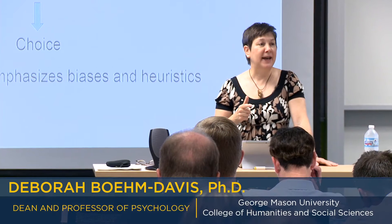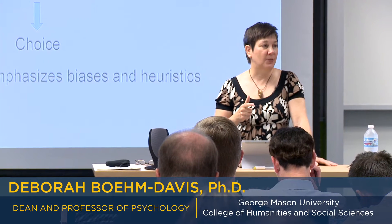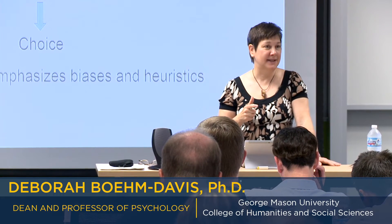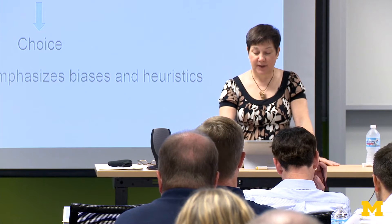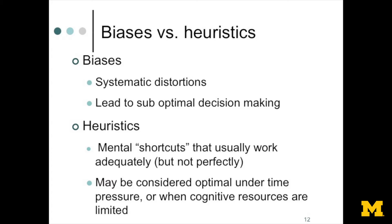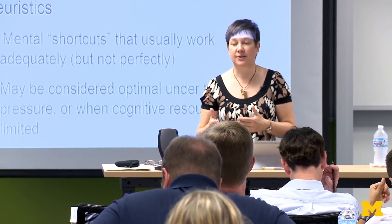It turns out that we have built into us biases and heuristics. A bias is a systematic distortion, something that's going to lead you to sub-optimal decision-making. These are things that intrude in the way that we make our decisions.